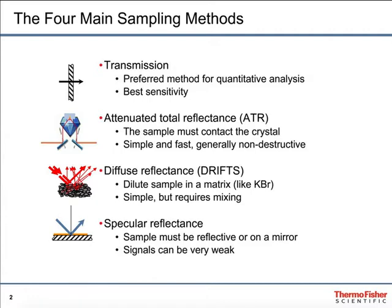In diffuse reflectance, the IR beam interacts with a sample which is in a loosely packed powder, usually mixed with an inert ingredient such as KBr or diamond powder. In specular reflection, the IR beam passes through a sample which is on the surface of a reflective sample, strikes the reflective surface, and then bounces back through that sample a second time — double passing — and then goes onto the detector. Each of these techniques has relative strengths and weaknesses for specific sample types, and we'll briefly examine those.